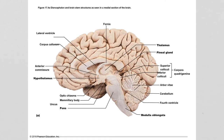The ventricles are where cerebrospinal fluid is produced and travels through the brain. The lateral ventricle — bounded by the corpus callosum and fornix — has one on each side, separated by a wall called the septum pellucidum. Below that are the walls of the hypothalamus, forming the third ventricle. Cerebrospinal fluid travels from there down the cerebral aqueduct into the fourth ventricle.